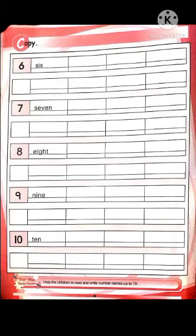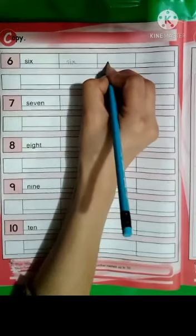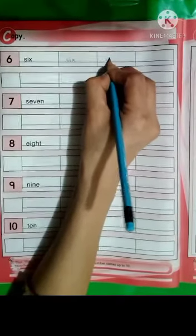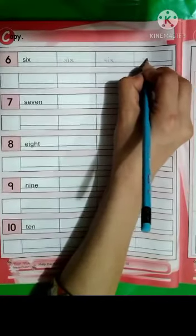Let's start writing with me the spell of 6 and 7. The spell of 6 is S-I-X, 6. Write with me, S-I-X, 6. Once again, S-I-X, 6. Make sure your pencil has a sharp tip.